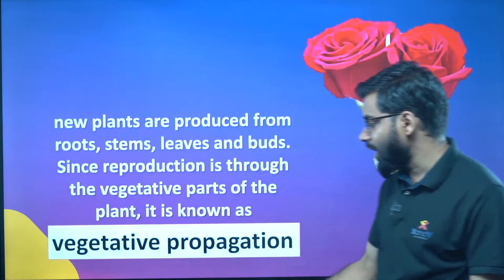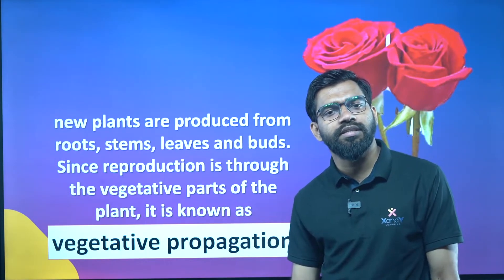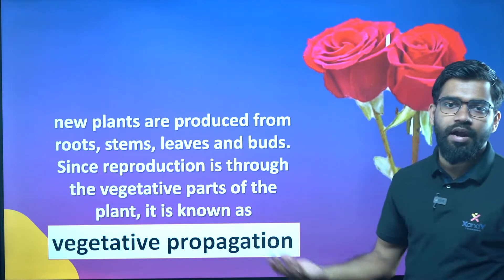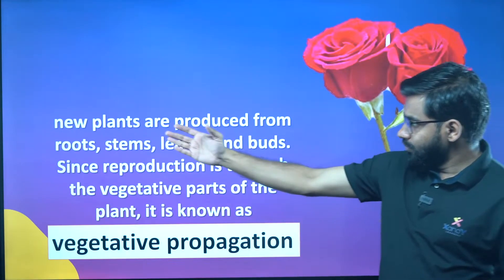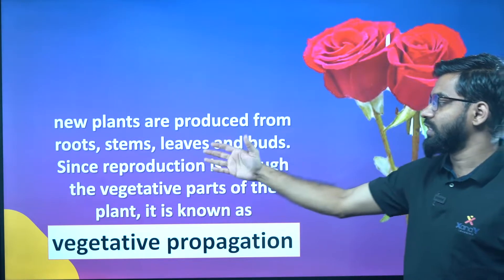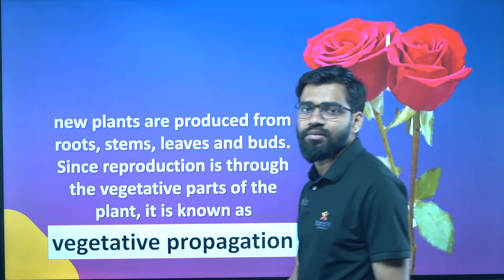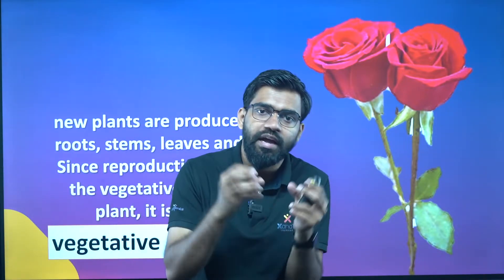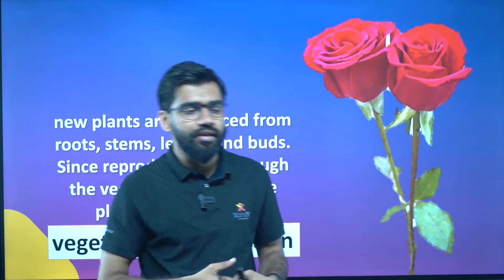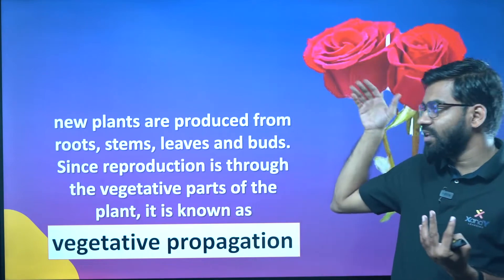Asexual reproduction is called vegetative reproduction of the plant. You can use the vegetative parts — the fruit, the leaf, the root. New plants are produced from root, stem, leaves, and buds. Since the reproduction is through the vegetative part of the plant, it is known as vegetative propagation. The vegetative parts are not the reproductive parts.